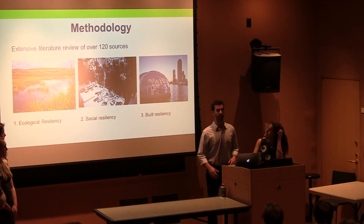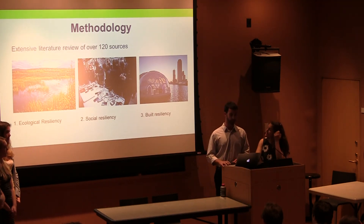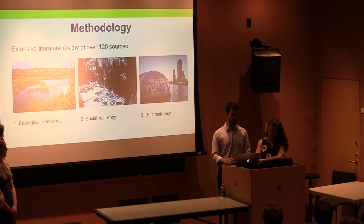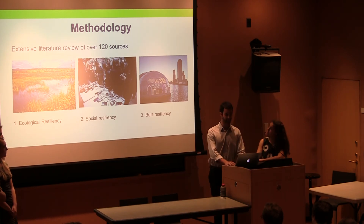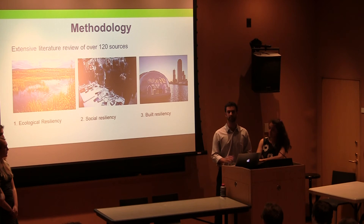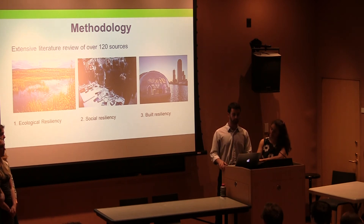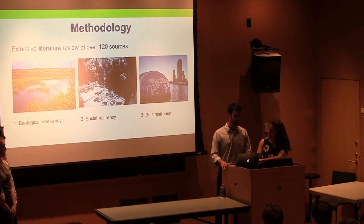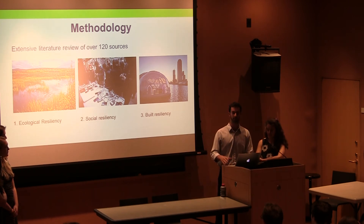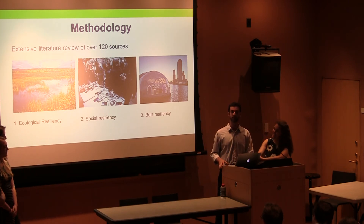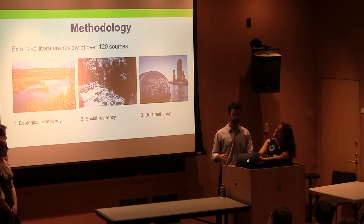We'd now like to take you through our methodology — what we've been doing the past four months. Our first task was an extensive review of literature on the topics of ecological, built, and social resiliency. Altogether, we reviewed over 120 sources spanning the disciplines of sociology, urban planning, ecology, engineering, politics, environmental studies, economics, and urban studies. The goal was to strengthen our state of knowledge — understanding what has already been done, how different people understand it, and what gaps exist in the field of resiliency.